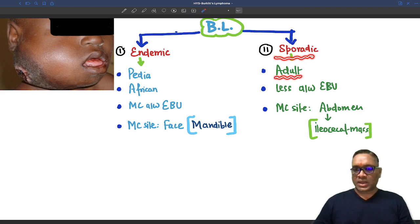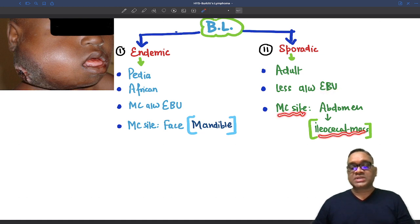Sporadic Burkitt lymphoma is usually seen in adults. They have less common association with Epstein-Barr virus and their most common site will be the ileocecal area in abdomen.